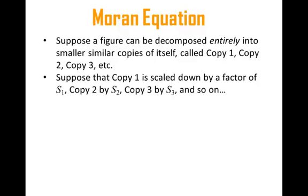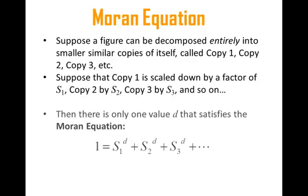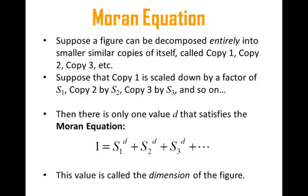Suppose a figure can be decomposed entirely into smaller copies of itself — copy one, copy two, copy three — where copy one is scaled down by S1, copy two by S2, copy three by S3, and so on. Then there is only one value of D that satisfies the equation: 1 equals S1 to the D, plus S2 to the D, plus S3 to the D, and so on for all pieces. This value of D is called the dimension of the figure.